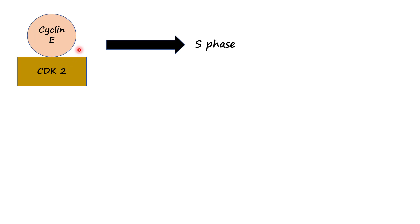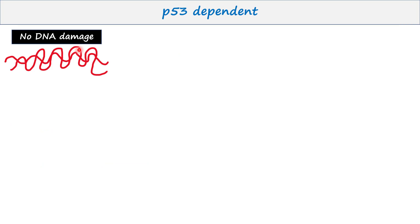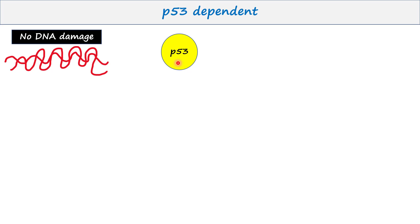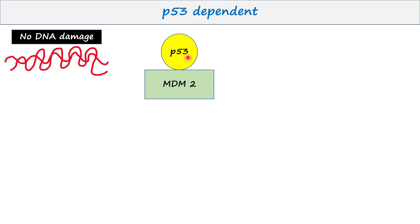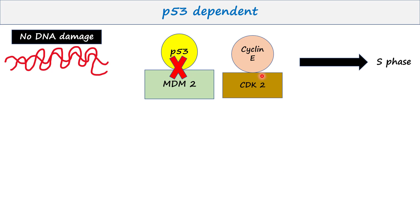There are two ways: P53-dependent and P53-independent. If there is no DNA damage, P53 protein remains in an unphosphorylated state in the cell. MDM2 protein binds this unphosphorylated P53 and degrades it. Cyclin E and CDK2 bind each other and the cycle moves forward.